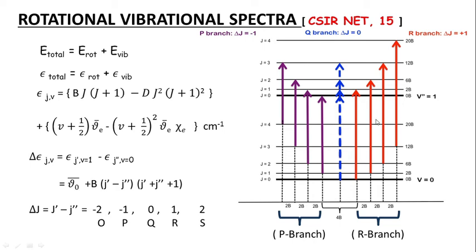In the rotational-vibrational spectra, the line at ΔJ = 0 constitutes the Q branch. For ΔJ = +1 the branch is called the R branch, and for ΔJ = −1 it is called the P branch. For example, the transition J = 0 → J = 1 has ΔJ = +1, and J = 1 → J = 2 also has ΔJ = +1. All ΔJ = +1 lines constitute the R branch, and all ΔJ = −1 lines constitute the P branch.